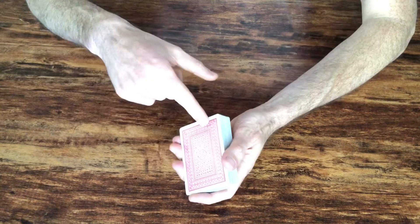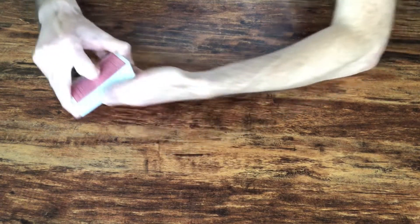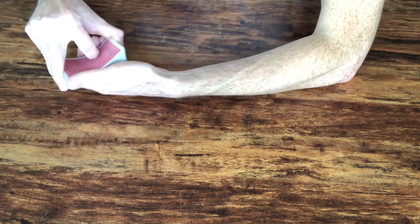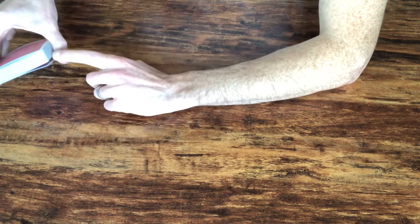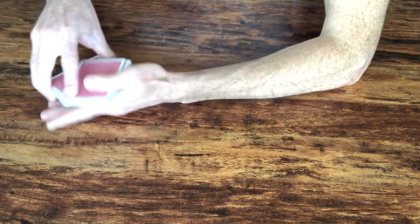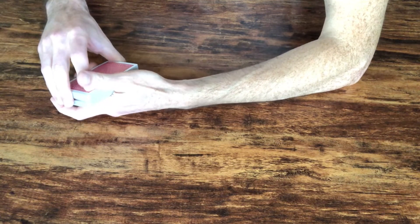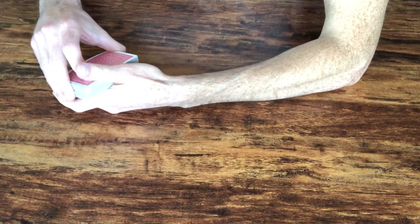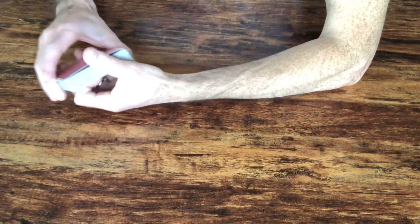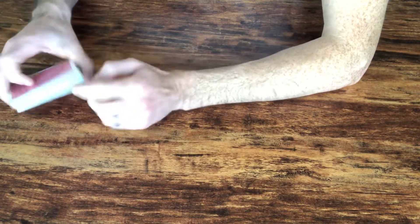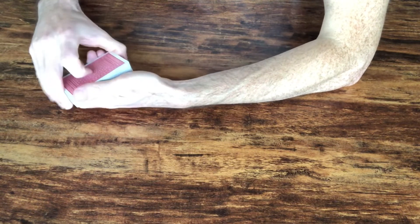And you can do that with as many cards as you need to do. And the same thing works for the bottom of the deck, but instead what you do is you catch that break, like that's under one card. You're going to swing cut, catch a break there, and then you're going to bring those back with a double undercut.